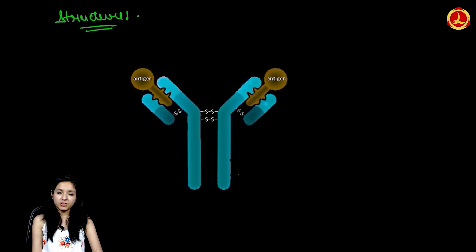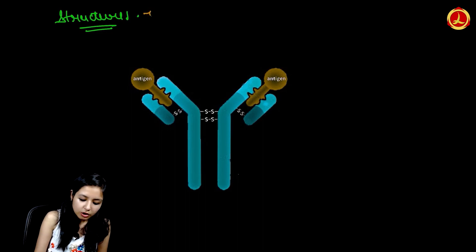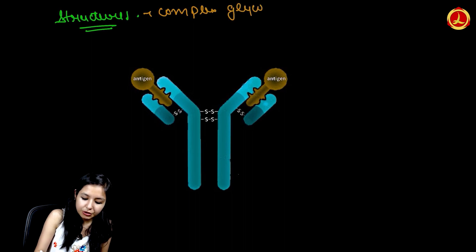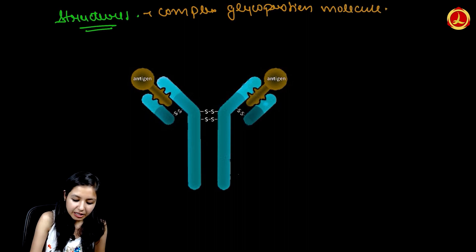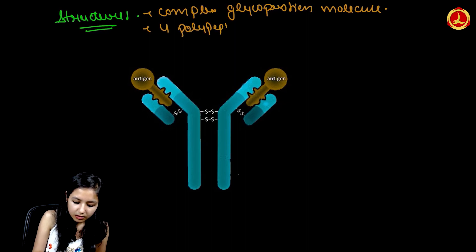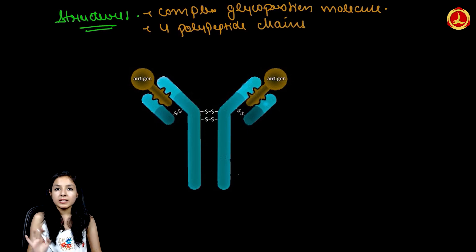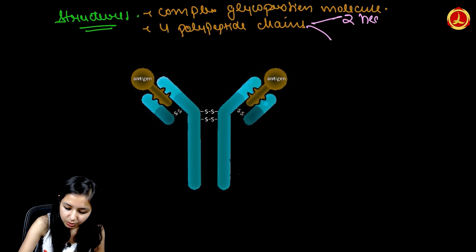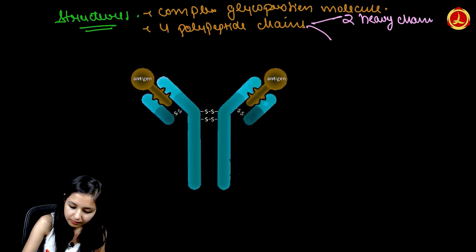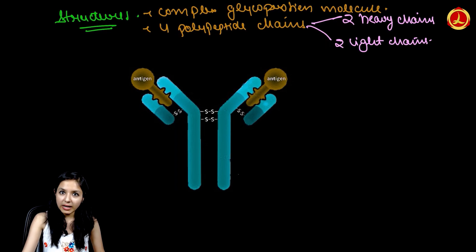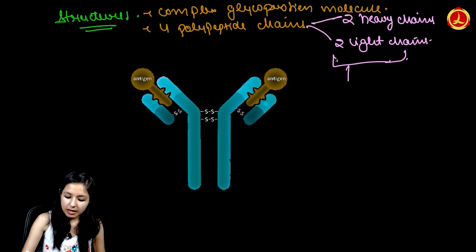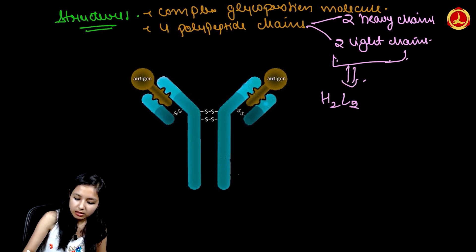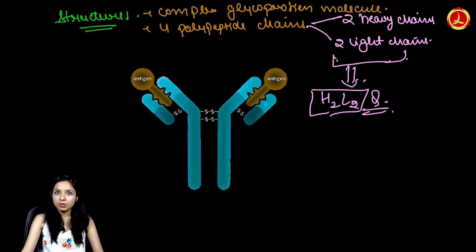The first point is that the antibody is made up of a complex glycoprotein molecule. It is made up of four polypeptide chains — two heavy chains and two light chains. Because there are two heavy chains and two light chains, we denote this complete structure as H2L2. So an antibody is denoted by H2L2.